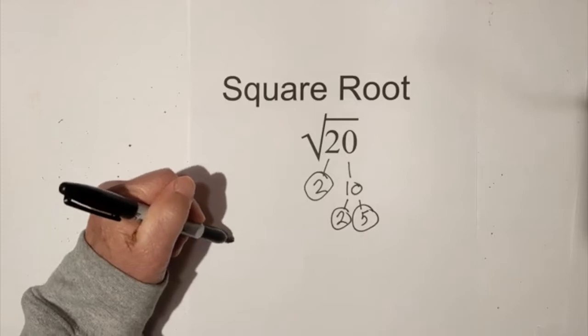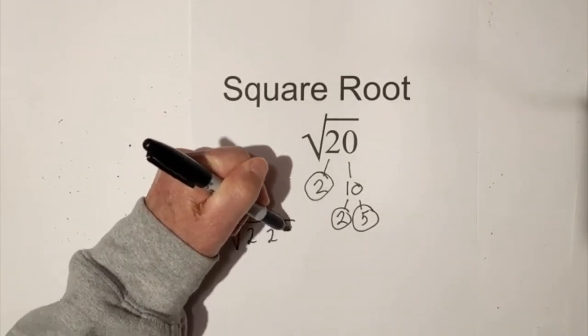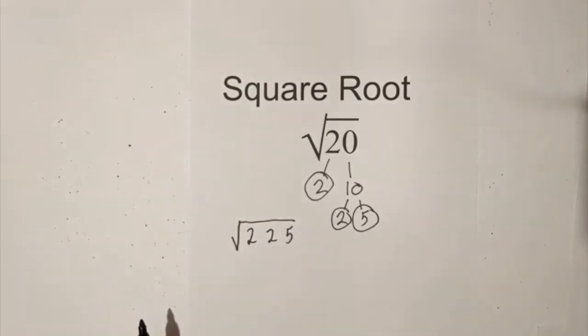Now I can place these back under the radical symbol. We have 2, 2, and 5. And remember you can only take out pairs of numbers.